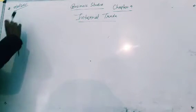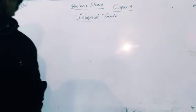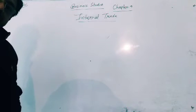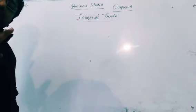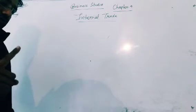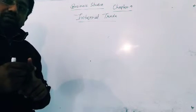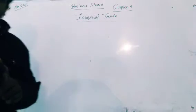Hello students, good morning. Today is 7th January 2021. Your chapter 9, internal trade, was going on. In the last class, I taught you about chain stores, related to fixed shop large retailers. So till now, I have taught you two types of fixed shop large retailers: first, departmental stores, and second, chain stores or multiple shops. Today, I want to continue with the third part, related to mail order houses.